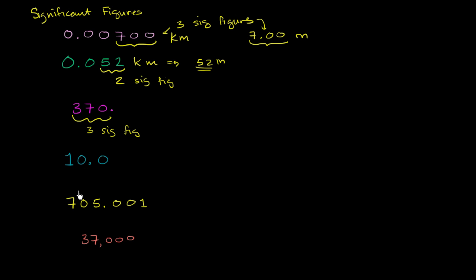Then on this next one, once again, this decimal tells us that not only did we get to the nearest one, but then we put another trailing zero here, which means we got to the nearest tenth. So in this situation, once again, we have three significant figures.